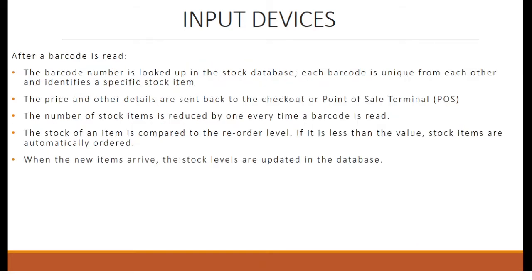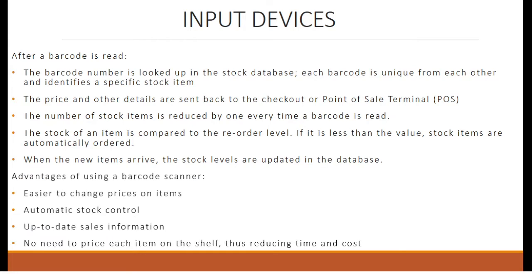After a barcode is read, the barcode number is looked up in the stock database. Each barcode is unique and identifies a specific stock item. The price and other details are sent back to the checkout or point of sale terminal. The stock count is reduced by 1 every time a barcode is read, and the stock level is compared to the reorder level — if it falls below this value, stock items are automatically ordered. When new items arrive, stock levels are updated in the database. Advantages include: easier price changes, automatic stock control, up-to-date sales information, and no need to price each item individually, reducing time and cost.